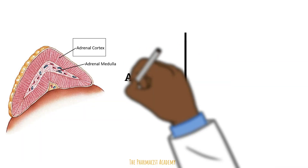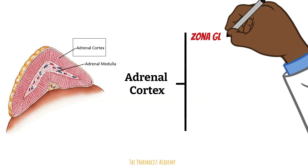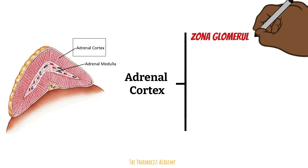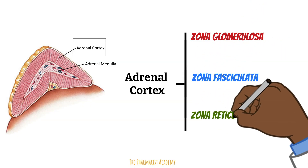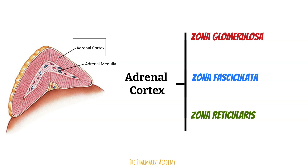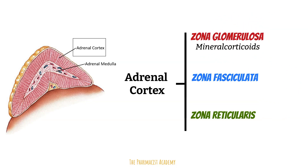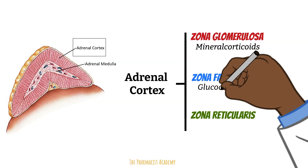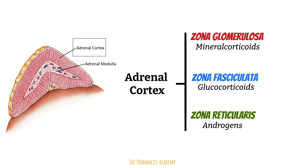The adrenal cortex is divided into three parts, each responsible for the production of certain hormones. There is the zona glomerulosa, zona fasciculata, and zona reticularis. The zona glomerulosa is where the mineralocorticoids are produced. The zona fasciculata is where the glucocorticoids are produced, and the zona reticularis produces androgens like testosterone.